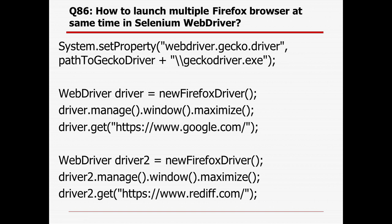How to launch multiple Firefox or any browser instances: suppose you need to work with two or three different windows. First, set the system properties and the path, then create WebDriver driver1 as a new Firefox/IE driver instance, maximize it, and pass a URL. Then create another instance driver2, maximize it, pass a URL. Similarly, create driver3. After multiple instances are created, you can handle them using window handles, move to a new window, and perform operations. That's how you can open multiple browsers at the same time.